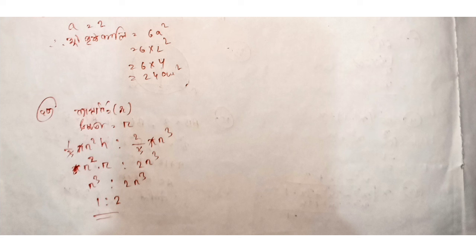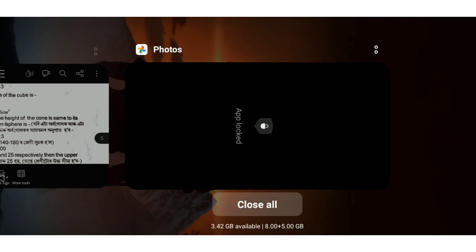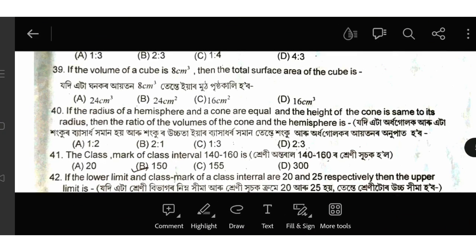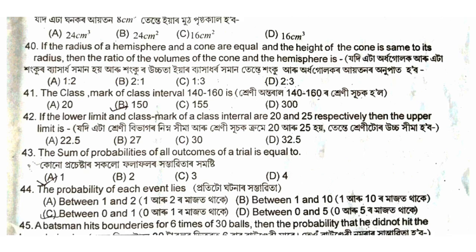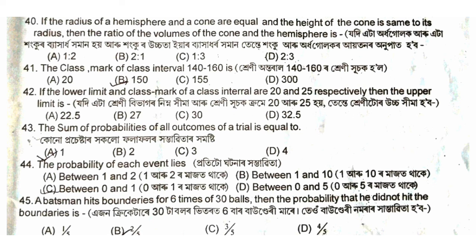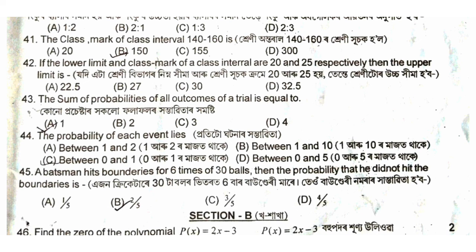R2 is equal to 2R3. R2 cancel, 1 is equal to 2R3. Option is equal to 41. Class mark of class interval 140 to 160. Option is equal to 2R3. R3 is equal to 30R3. The option is equal to 40R. R2 is equal to 0R1.